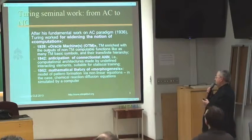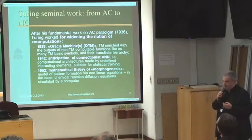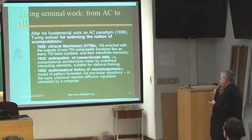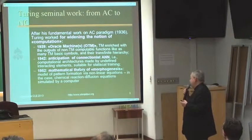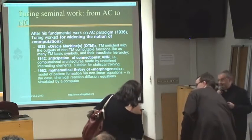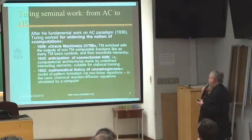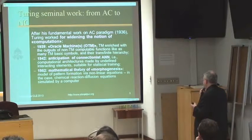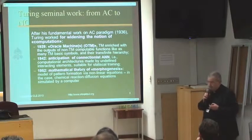In 1942, he wrote a particular anticipation of connectionist artificial neural networks, by proposing a computational architecture made by undefined interacting elements suitable for statistical training. And then in 1952, he developed the famous mathematical theory of morphogenesis — a model of pattern formation via non-linear equations — in the case of chemical reaction-diffusion equations simulated by computer.